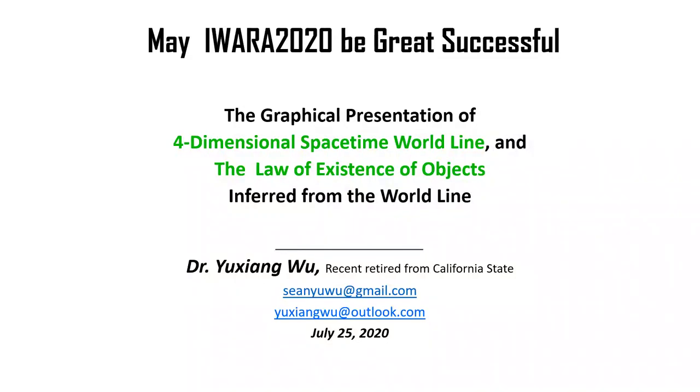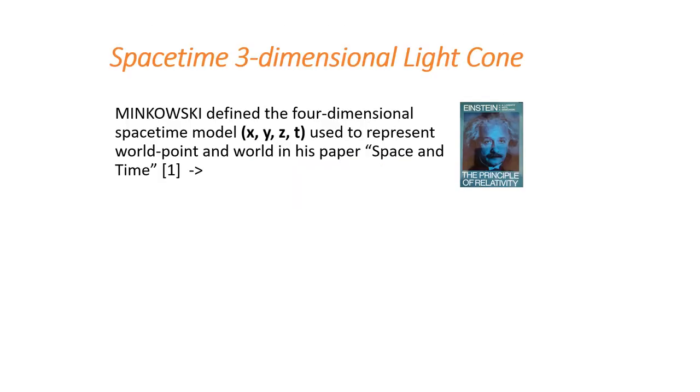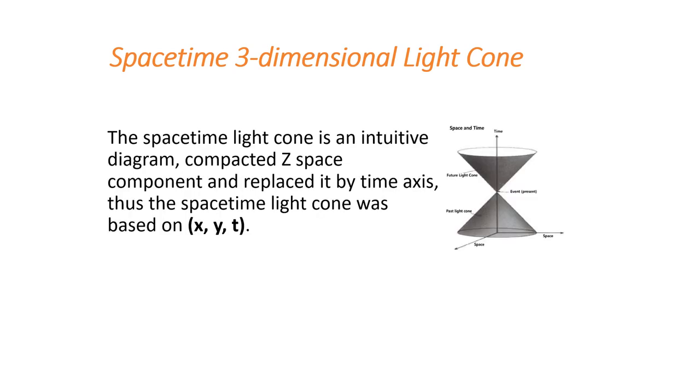The graphical presentation of four-dimensional spacetime world line and the law of existence of objects inferred from the world line. Minkowski defined the four-dimensional spacetime model XYZT used to represent world point and world in his paper Space and Time. The spacetime light cone is an intuitive diagram compacted z-space component and replaced it by time axis.